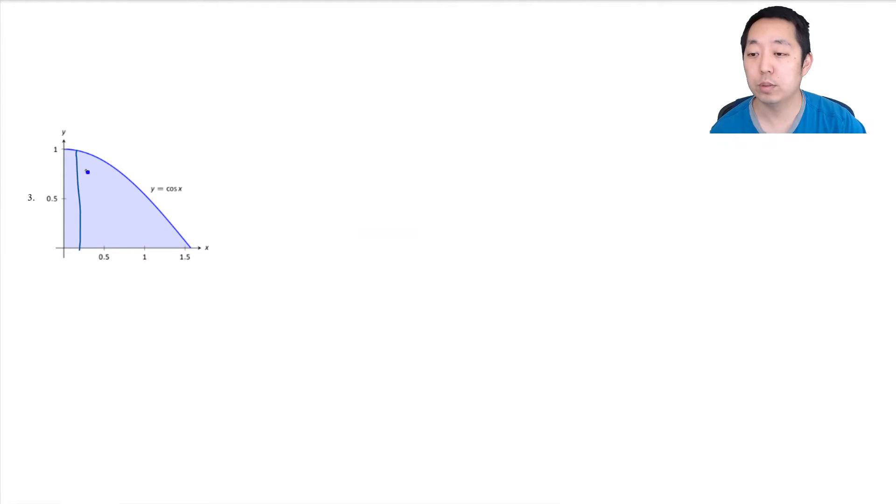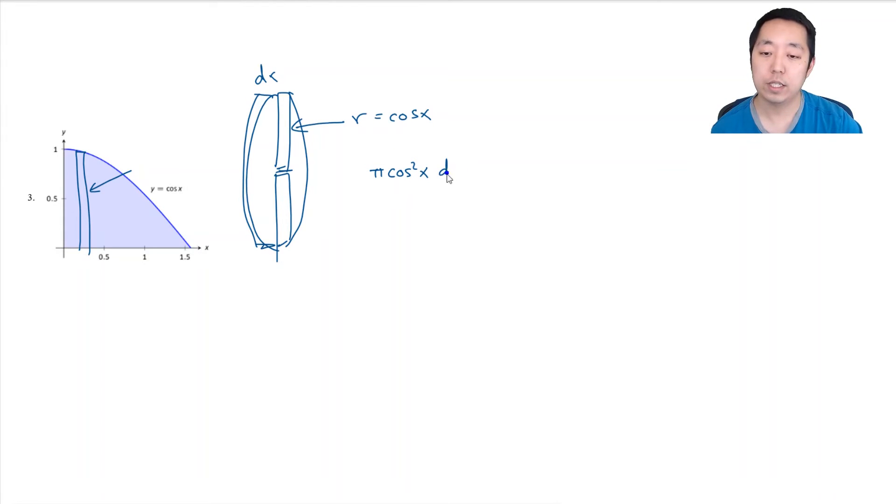Same thing here. I'm going to do my representative rectangle and I'm going to sweep it around the x-axis, and that's going to create a disk. If I think about my disk that it's going to create, it's going to be a little bit thick here, a thickness dx. My radius is the height of my rectangle, so my r is equal to cos(x). And so we're going to do π times cos²(x), that's the area of my face times dx. That's the volume of this disk.